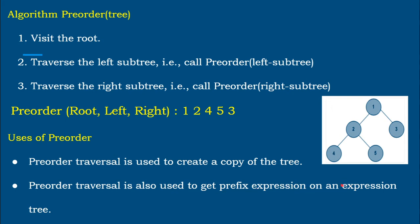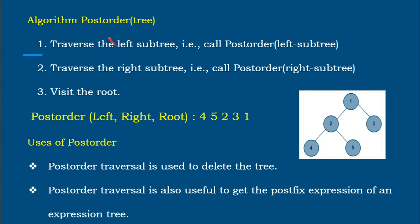Pre-order traversal helps to create a copy of the tree, because it gives the order in which the tree was originally created: 1, 2, 4, 5, 3. It also helps to give the prefix expression of a given expression tree. An expression tree has variables and operators as nodes, and traversing it in pre-order gives the prefix expression, where the operator comes first followed by the operands.